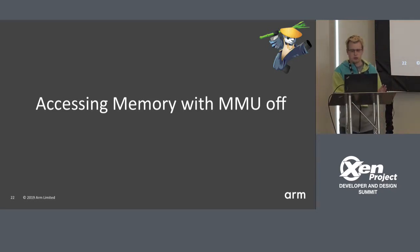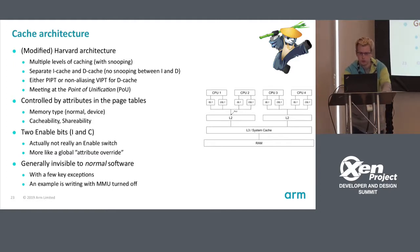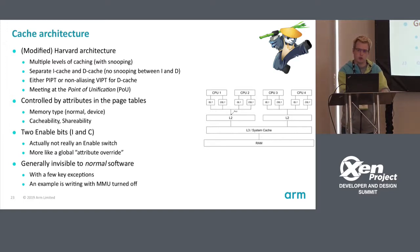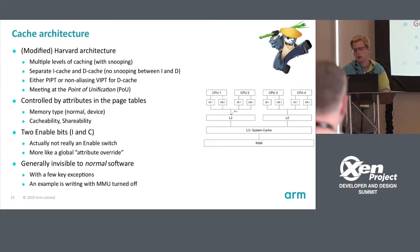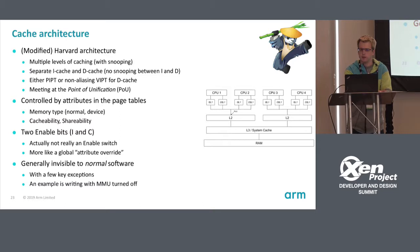The second problem we noticed on ARM is accessing memory with the MMU off. Before going to that problem, let me quickly go through the cache architecture on ARM. The ARM architecture is a modified Harvard architecture with multiple levels of caching and snooping. For example, with four CPUs: each CPU has an L1 instruction and data cache; two clusters each share an L2 cache; and then there is a common L3 system cache. There is no snooping between instruction cache and D-cache.